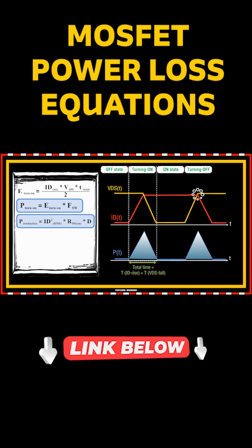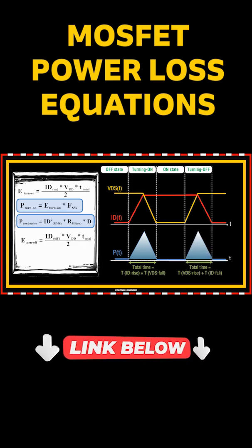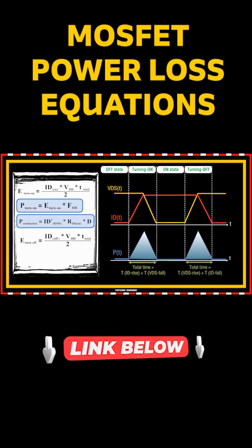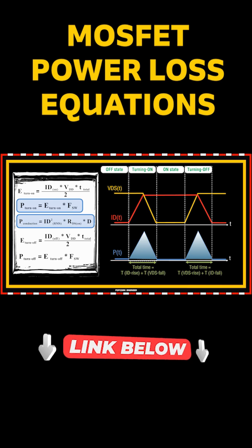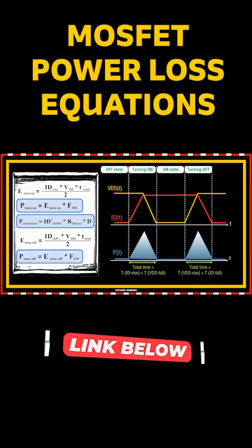When the voltage between the drain and source VDS reaches the value of VDD, the current starts to drop until it reaches zero. That overlap between the two curves leads to energy loss and is calculated in the same way as E_turn_on. Just like turn-on losses, we multiply this energy by the switching frequency to get the total turn-off power losses.